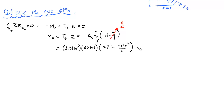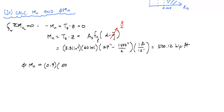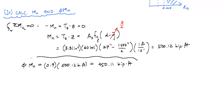Then we just multiply by phi to get the design moment strength: phi·MN = 0.9 × 500.12 kip-feet = 450.11 kip-feet. This is about as deep or as challenging as the FE exam might get, and you can do it.